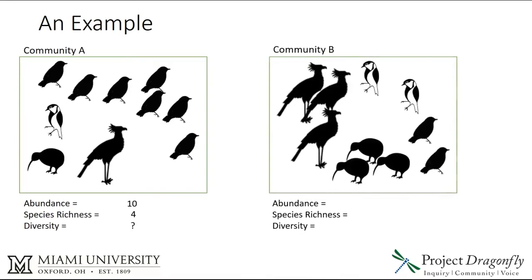If we compare to Community B, we can see that we have the same abundance — 10 individuals — and the same species richness of four. But you can get a sense that it's a little bit more balanced and even in terms of the number of individuals of each species. Because of that, we would think that the diversity will be a little higher.